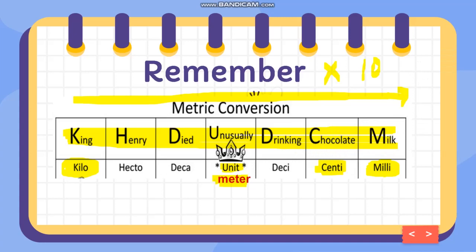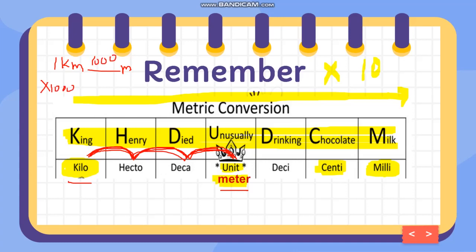I'll give you an example to find the relationship of kilo to meter. In one kilometer, how many meters? From kilo to meter, how many movements going to the right? One, two, three — three movements. Each movement means multiply by 10, so that is 10 × 10 × 10 = 1,000. One movement means tens, two means hundreds, three means thousands. So 1 multiplied by 1,000 equals 1,000. That's why 1 kilometer is equivalent to 1,000 meters.